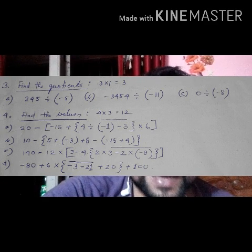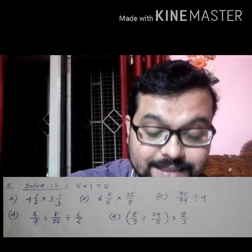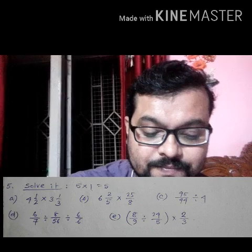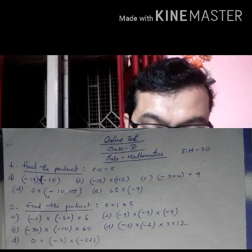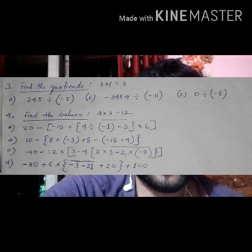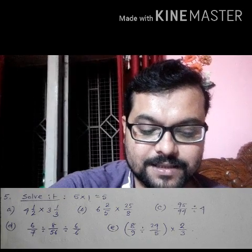Next, find the product: minus 1 multiplied by minus 30, then multiplied by 6. Then minus 9 multiplied by minus 9, then again minus 9. Then minus 50 multiplied by minus 10 multiplied by 60. Then minus 8 multiplied by minus 6, then multiplied by 3 multiplied by 12. Next: 0 multiplied by minus 3, then multiplied by minus 271.